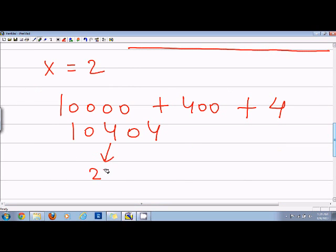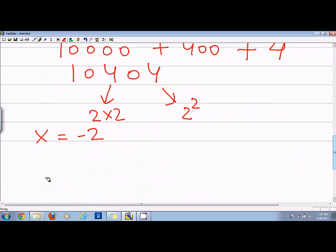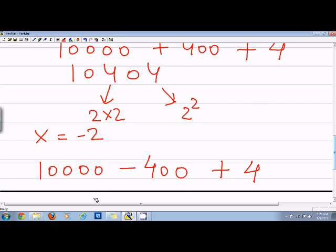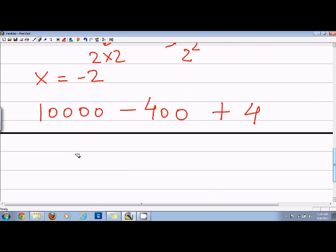The same way I told you the trick. Similarly, if x is equal to minus 2, in this case, it will be 10000 minus 400 plus 4. So that will be equal to 9 and 6 and then 0 and 4.